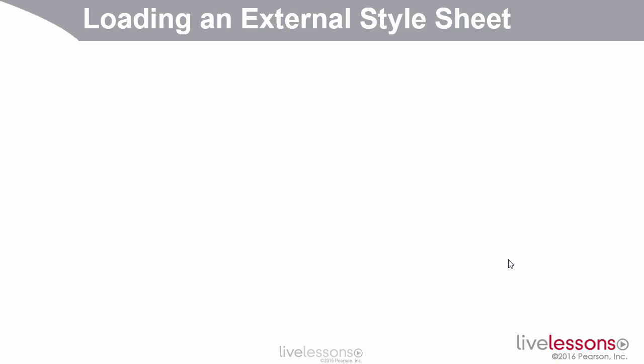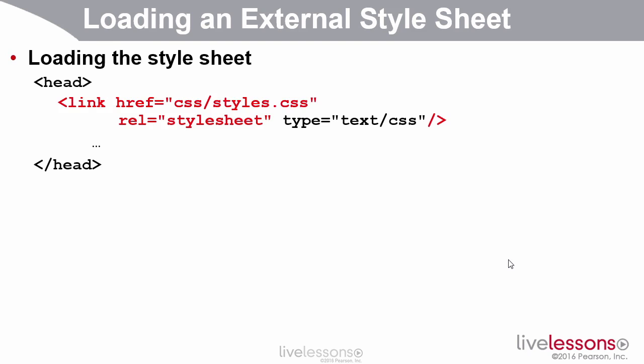A style sheet is a file that contains descriptions on how things in the page ought to be laid out. To load one, you use the link tag, and the link tag points at your style sheet. Typically — though not required — your style sheet is in a subfolder under the location where your HTML file is. In XHTML it was required that you supplied the type attribute; this is optional in HTML5 and I will normally leave it off.